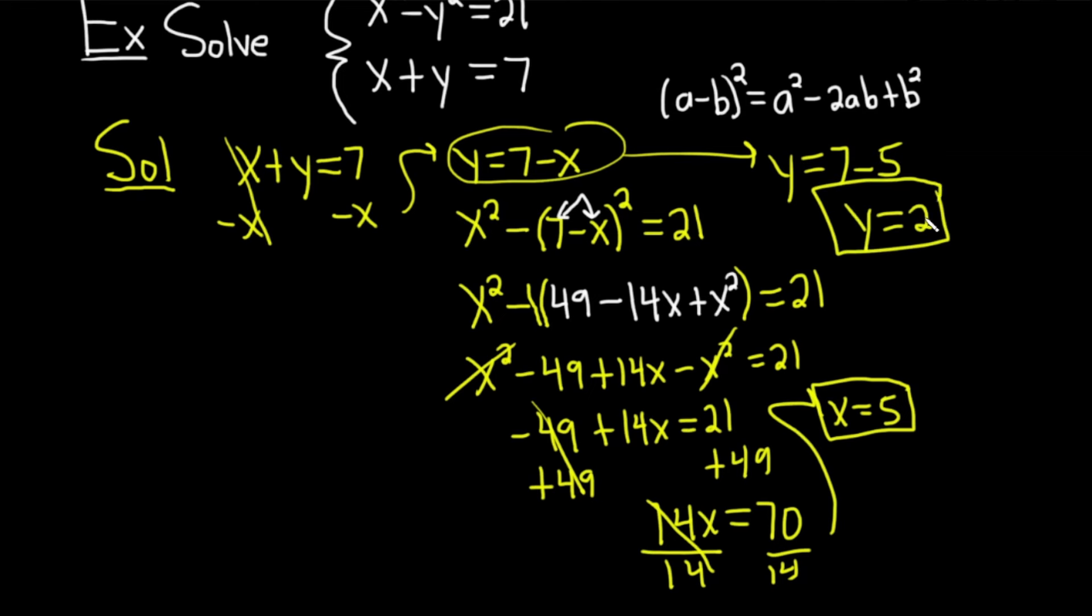And that would be the solution to this problem: x equals 5 and y equals 2. You could write it as an ordered pair, you could write it as 5 comma 2. That's usually the preferred way to write it because this has a graphical meaning, right?